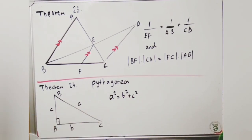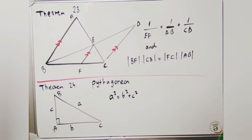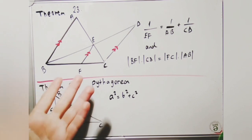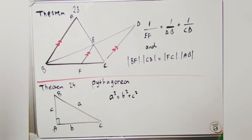Theorem 24 is the Pythagorean theorem, which I hope you already know. It is a very basic theorem in geometry. Speaking geometrically, a² = b² + c². We can use the Pythagorean theorem only for right triangles.